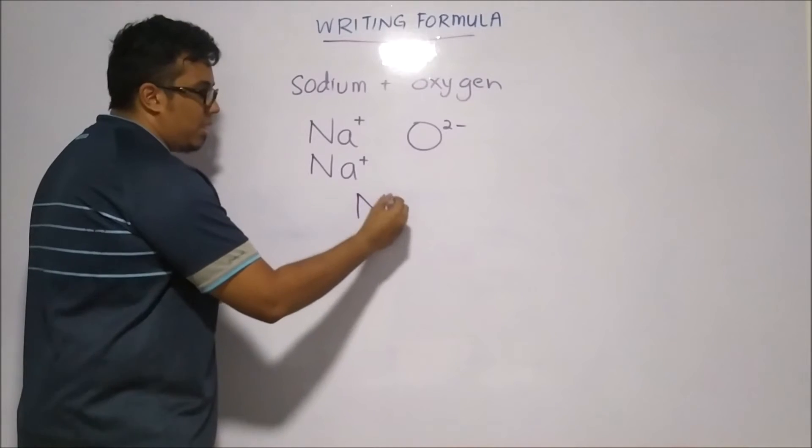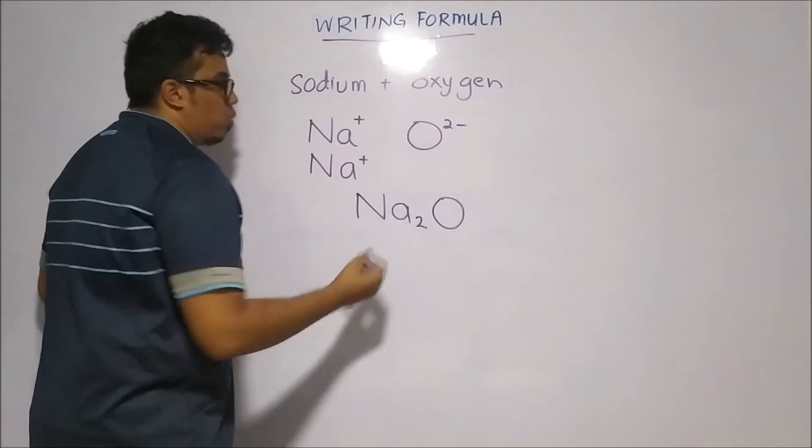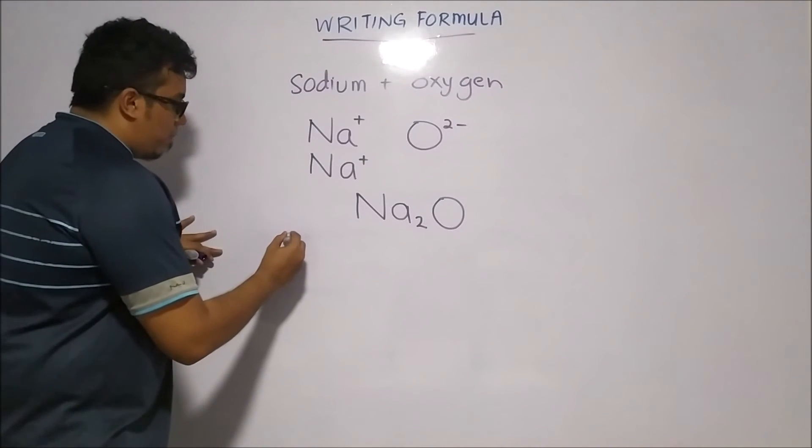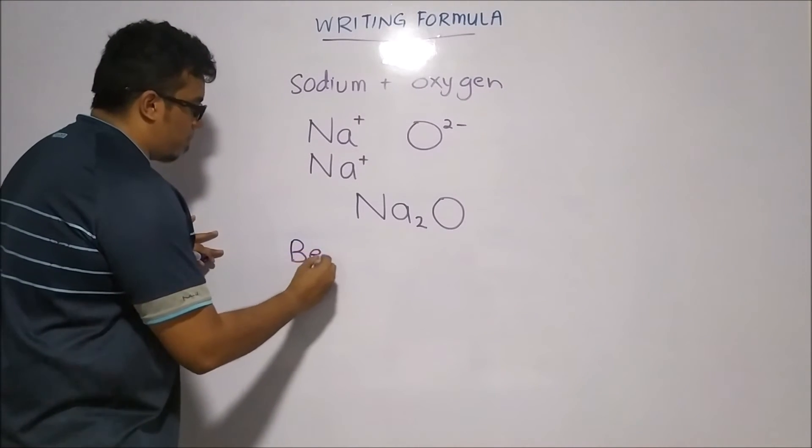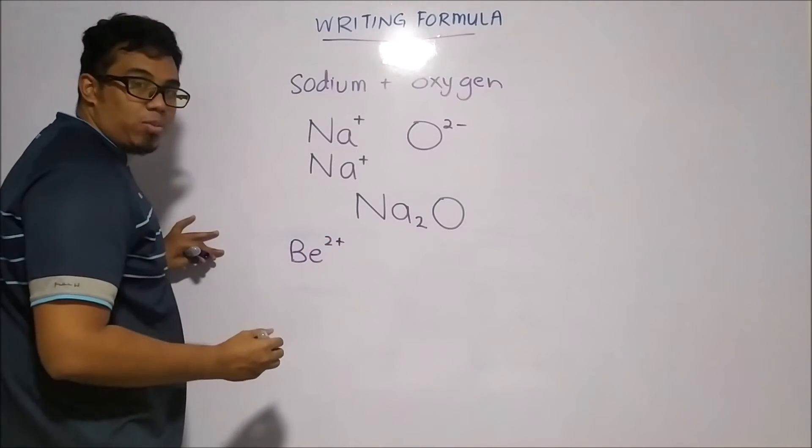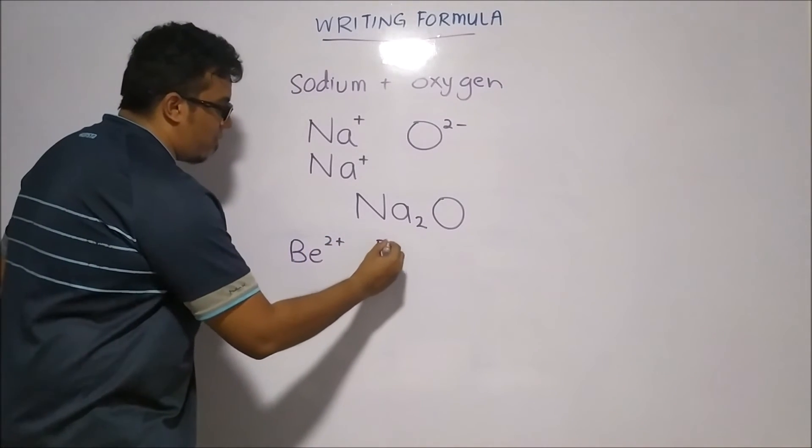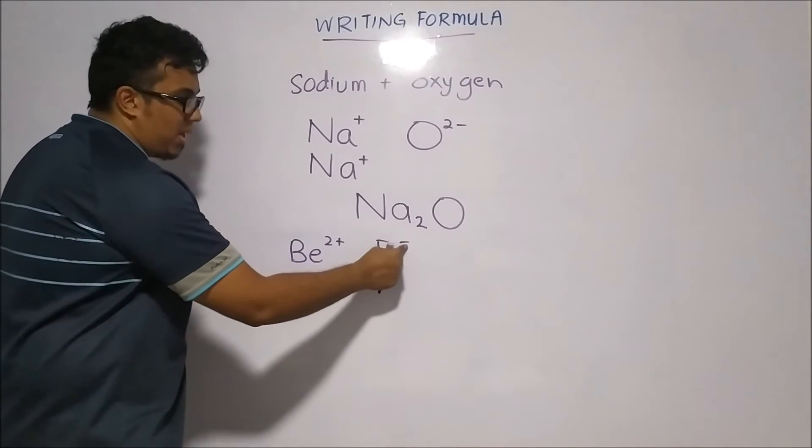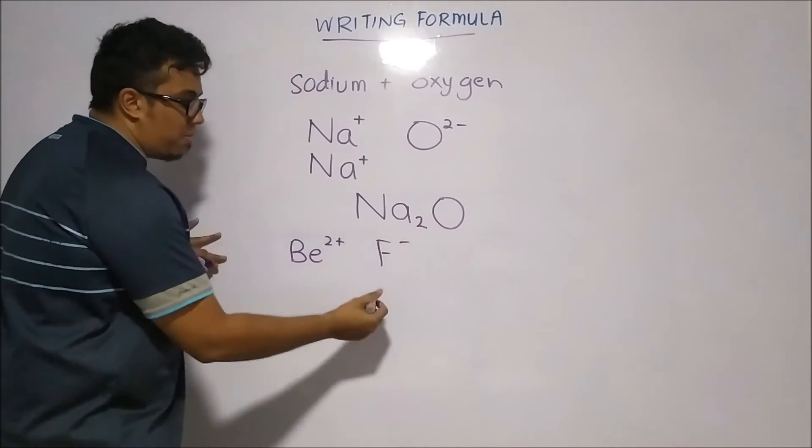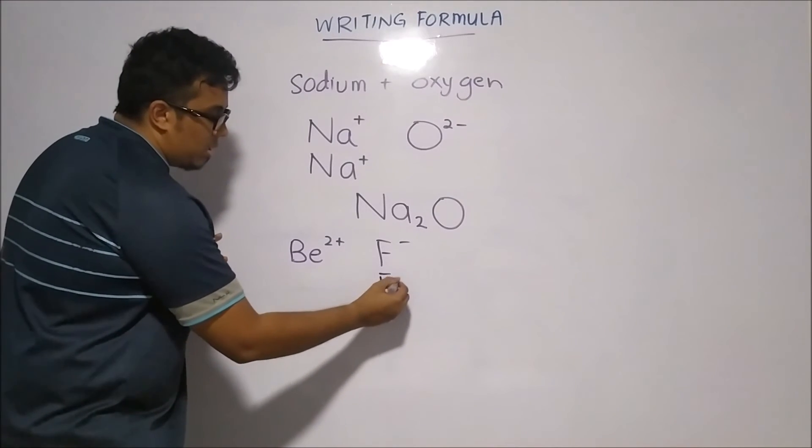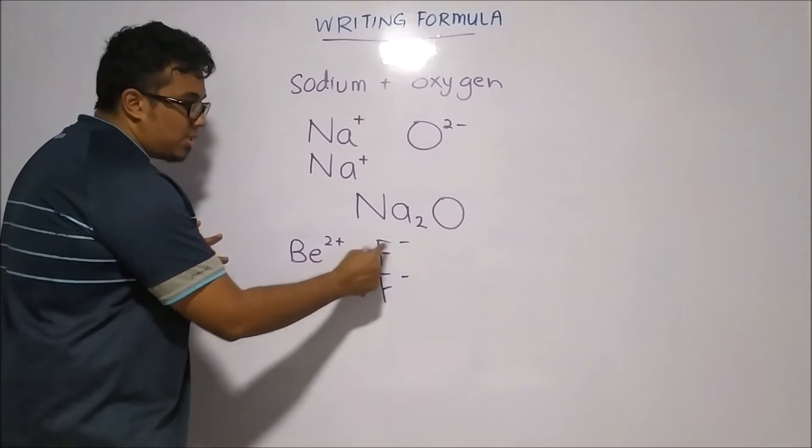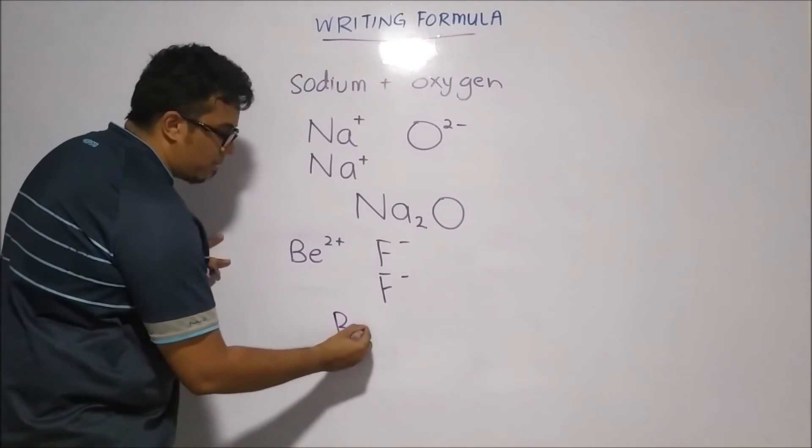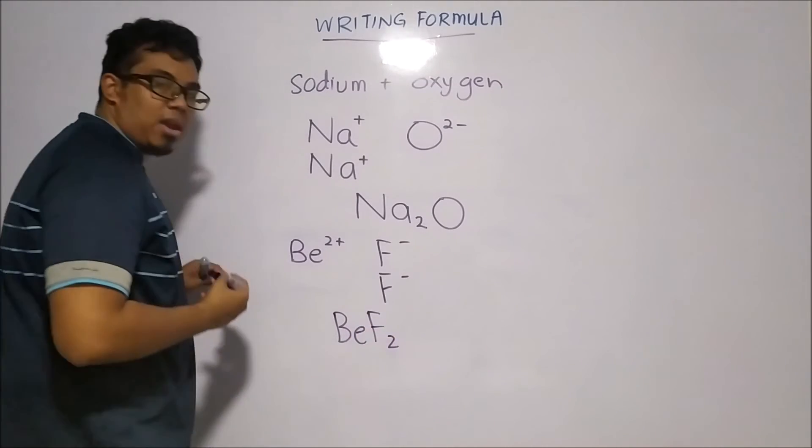So one more example would be beryllium 2+ and fluorine 1-. So we have beryllium 2+, fluorine 1-. You can see that the charges don't match up. We require another fluorine. So we have 2 positive charges and 2 negative charges. And they will form BeF2.